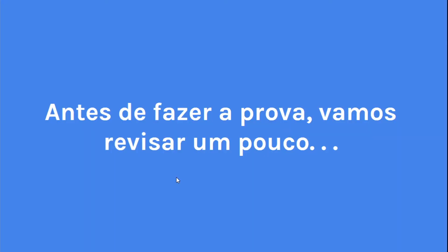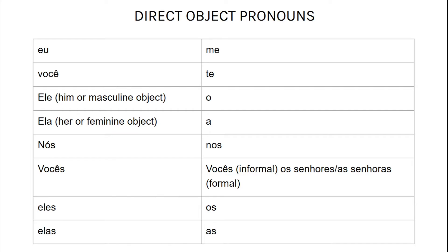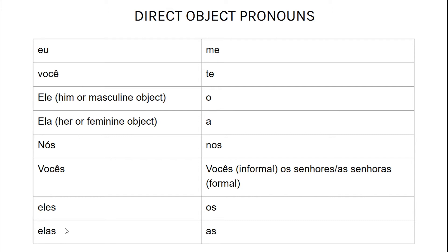Before we do the test, let's review a little bit. Direct object pronouns. I want you to just make sure the most important thing to note here is the ele, ela, eles, elas — how it is o, a, os, as.